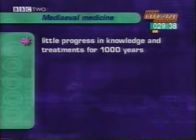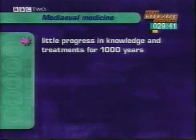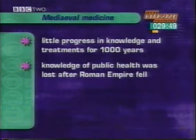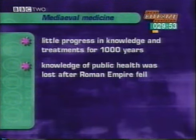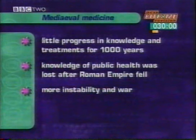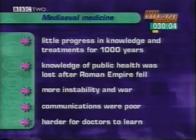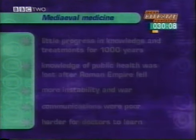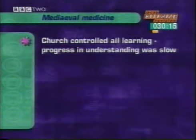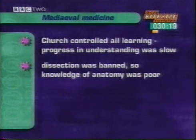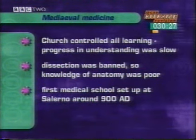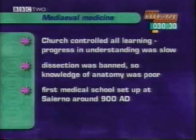The Middle Ages was a time of little change in medicine — medical knowledge and treatment stayed at the same low level for nearly 1,000 years. Knowledge of public health, including the importance of clean water, was lost after the fall of the Roman Empire, surviving only in monasteries. There was more instability and war, libraries and universities collapsed, and communications were poor. During the Middle Ages, the church controlled all learning, making progress in medical understanding difficult and slow. The church banned dissection, so knowledge of anatomy was poor. The first medical school set up in the Middle Ages was at Salerno in Italy, in about 900 AD.